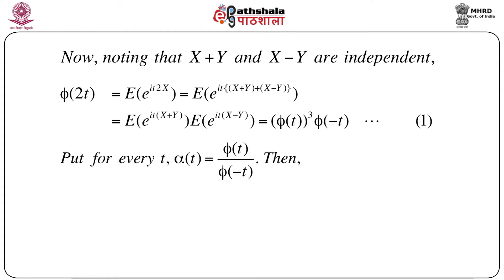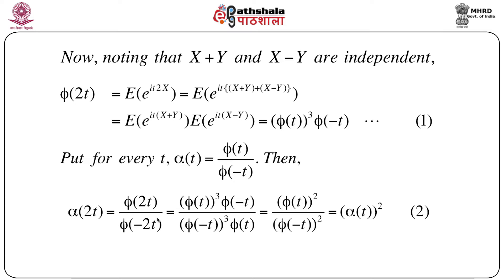Now define α(t) = φ(t)/φ(-t). Then α(2t) = φ(2t)/φ(-2t). Using equation 1, φ(2t) = φ(t)^3·φ(-t), and replacing t by -t gives the denominator as φ(-t)^3·φ(t). Simple cancellation gives α(2t) = [φ(t)/φ(-t)]^2 = α(t)^2. Call this equation 2. So we get α(2t) = α(t)^2.